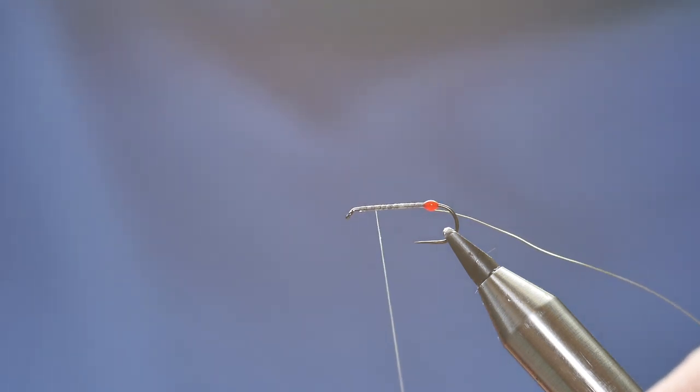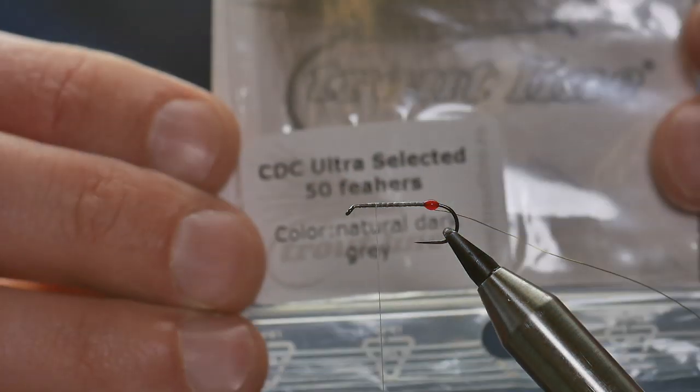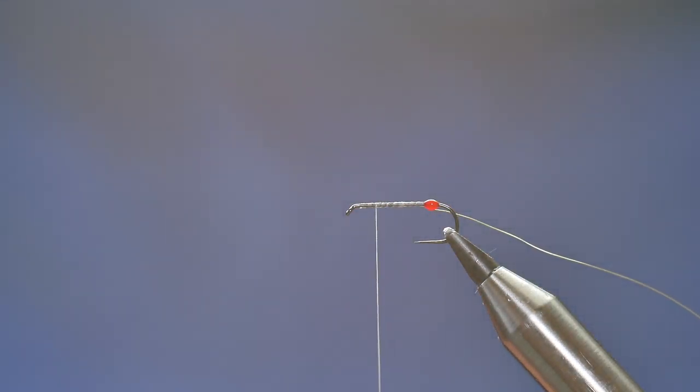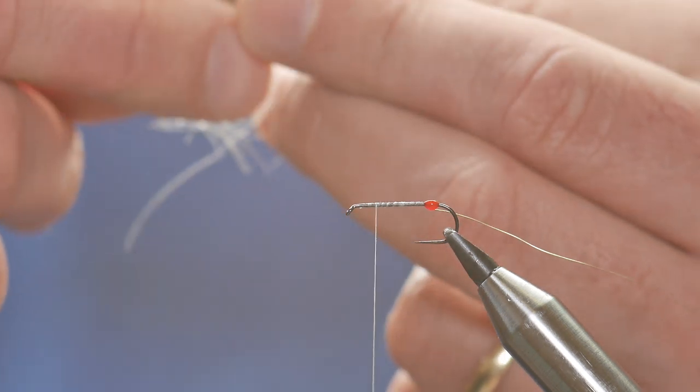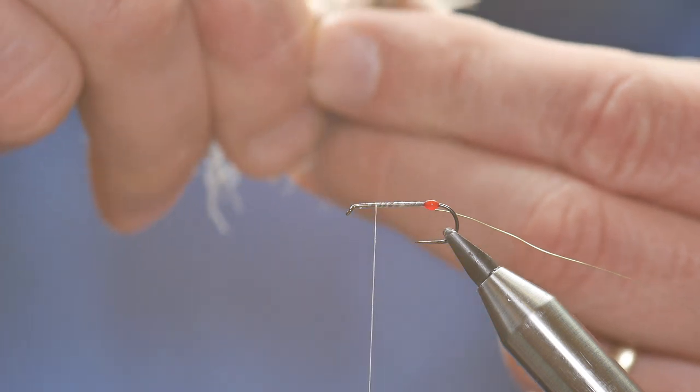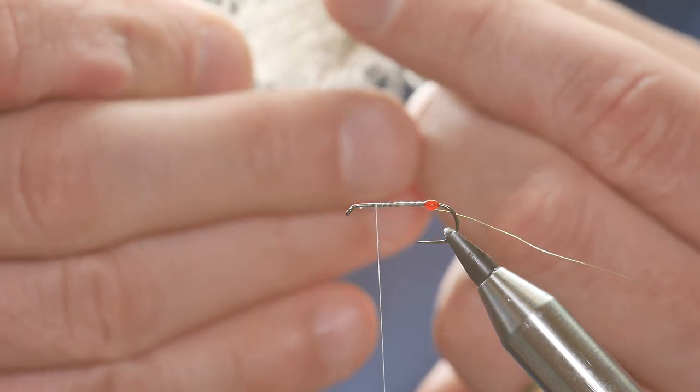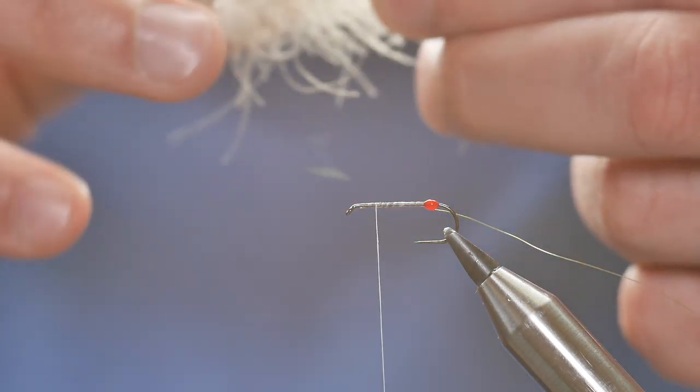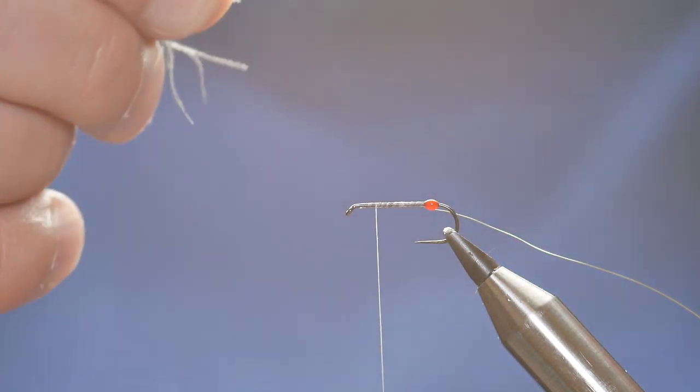Now, the next material, then, is CDC. And this is the Ultra Select CDC from Troutline, and it's grey in colour. And I've selected four plumes. I know it seems like a lot, but this is a big fly. And it's meant to be fished in riffly fast water. So, that's why I'm using the amount of CDC I am. I'm just lining up the points here, which I should have done before. I've got all my fibres here.